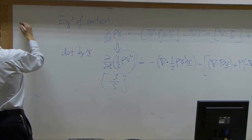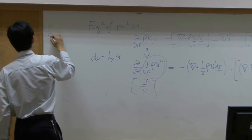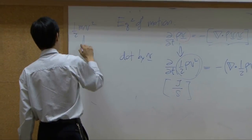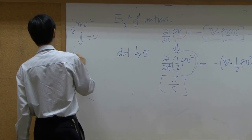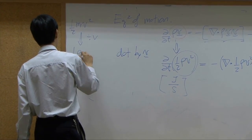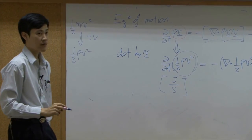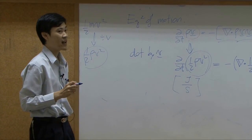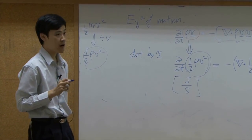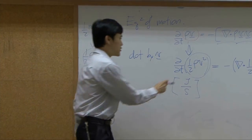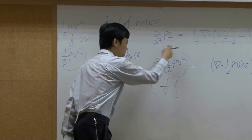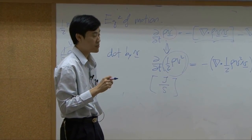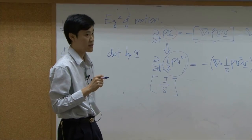Normally kinetic energy is one-half mv squared. If you divide by volume you get one-half rho v squared. So one-half rho v squared is kinetic energy per unit volume, meaning this term represents the change in kinetic energy per unit volume in your system.